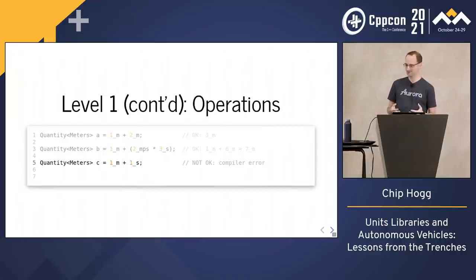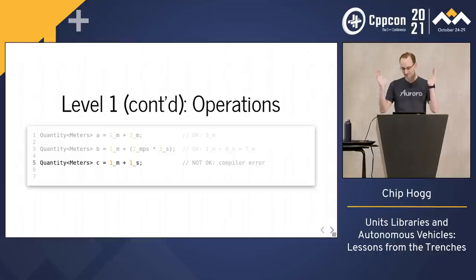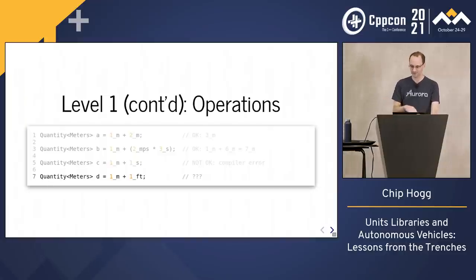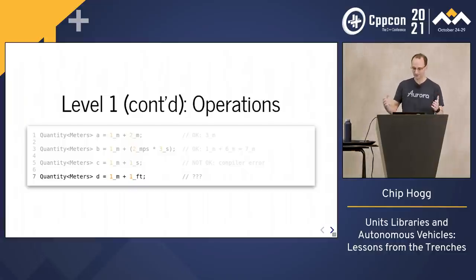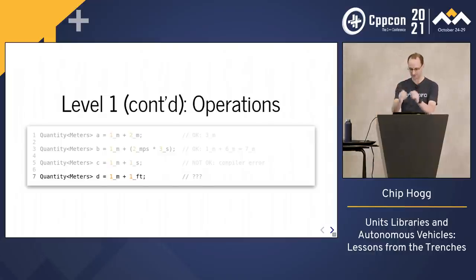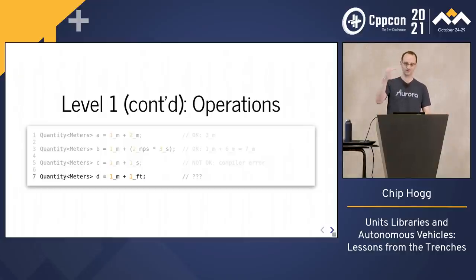Then there's something like one meter plus one foot. Is this meaningful? Should the library accept this? Yeah — thinking in quantities, this totally makes sense. It's a well-defined quantity of length. But thinking in code, we can't carry out addition until we first get the inputs into a common unit. So this takes us to the next level of the units library, which is conversions.